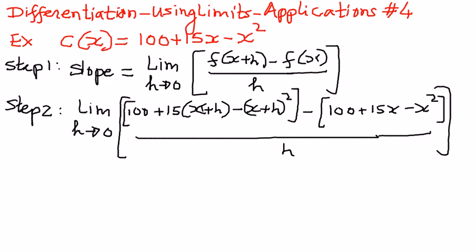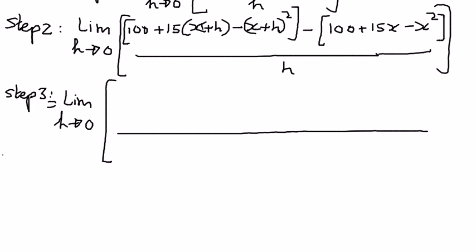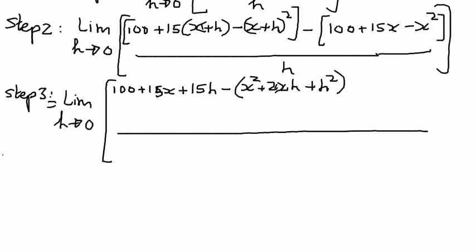In the third step, we're going to simplify the math. Limit as h approaches 0. We write the numerator in two levels for more space: 100 plus 15x plus 15h minus (x squared plus 2xh plus h squared). That is the first part of the equation. In the second part, we distribute the negative sign to every term inside the brackets: negative 100 minus 15x plus x squared. The whole thing is divided by h.